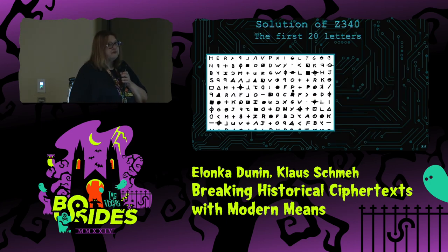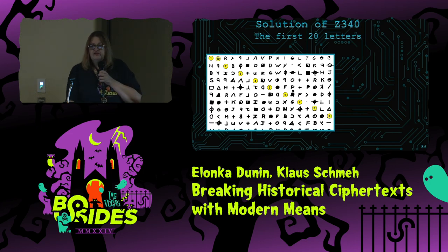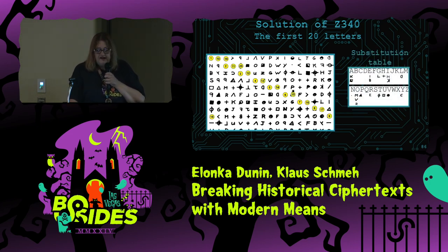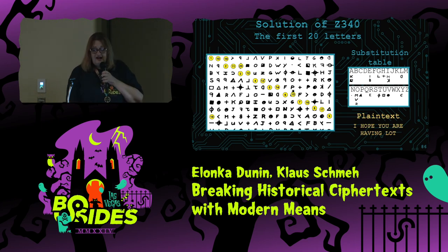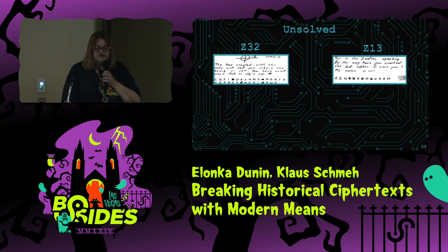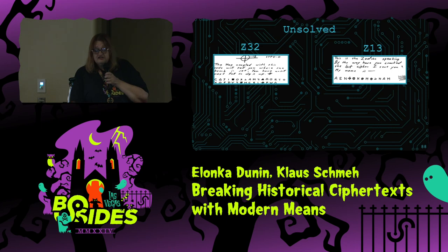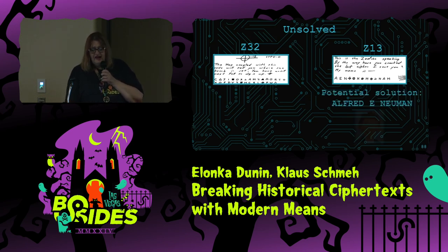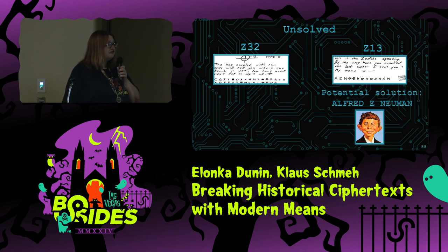Briefly about how the Z340 came apart: take the first 20 letters, come down diagonally — sort of like a knight move in chess — then make a homophonic substitution table. The plaintext begins: 'I hope you are having a lot...' — I won't read the whole thing because this guy was not all there. But they clearly solved the message. That leaves two messages, the Z32 and Z13, which are not yet solved. Some say they will never be solved because they're too short; others say maybe they'll include some combination of systems from the others. Some say the Z13's potential solution is 'Alfred E. Newman' from Mad Magazine.